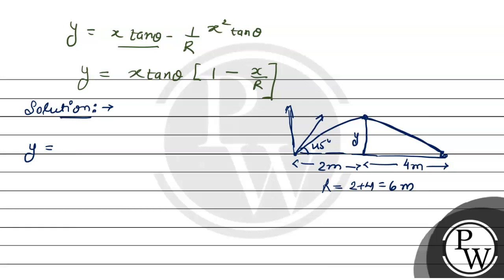Y equals x times tan 45 degrees, then 1 minus x upon R. X is given as 2 meters, so y equals 2 times tan 45 degrees, then 1 minus 2 upon 6. Solving this, 2 cancels with 6 giving 3. Y equals 2 times 1, which is 1, times 1 minus 1/3. The bracket solves to 2/3.